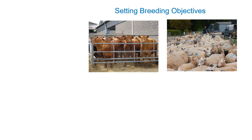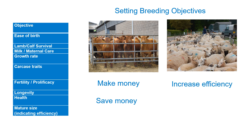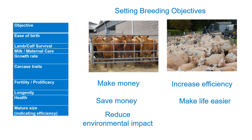When setting breeding objectives, there are a whole number of attributes we can change within our enterprise. The first thing is to decide what priority to give to these. Think about the things that will make you the most money, and equally those that will save you money or make the enterprise run more efficiently. In addition to those economic drivers, we also need to think about attributes that reduce environmental impacts, reduce labour input, and improve the welfare of your animals.